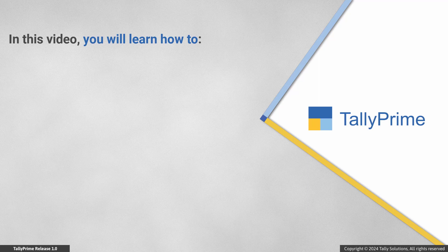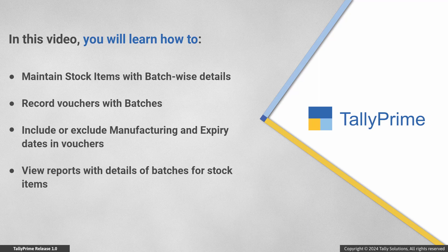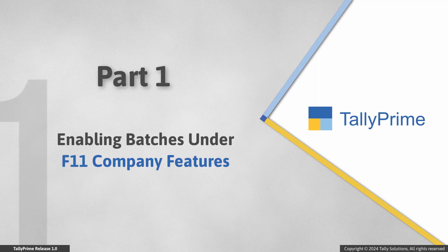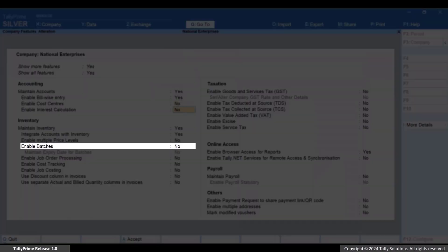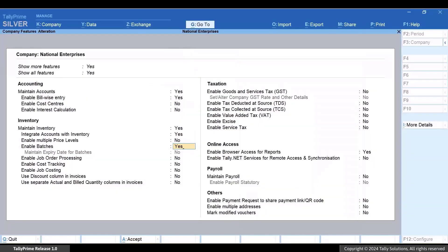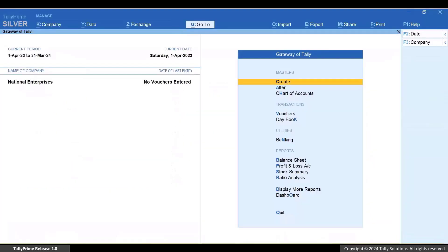You will learn the process to set up Tally Prime to maintain stock items with batch-wise details. You will also know how to record vouchers with batches with or without manufacturing and expiry dates. Tally Prime also provides reports where you can view batch details. Let's first see how to enable batches under F11 company features: press F11, show more features, and then enable batches. Once you enable the feature, you can maintain stock items with batch-wise details.